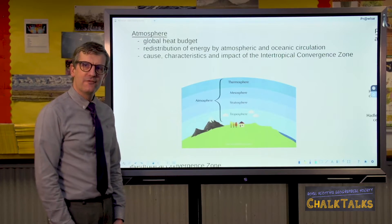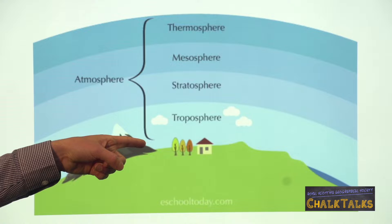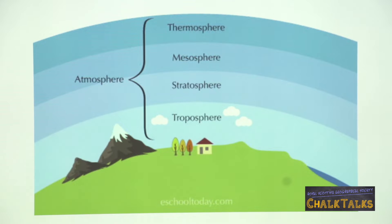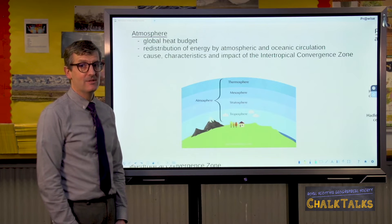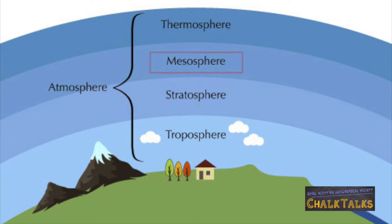The atmosphere has four layers. In this unit we mainly focus on the troposphere, the bottom layer of the atmosphere. It contains all of the weather and 75% of all the air. But the other layers are important too. The stratosphere is where the ozone layer is and it protects us from UV radiation. The mesosphere is where meteorites burn up and the thermosphere is where the aurora happens.